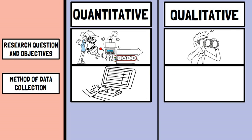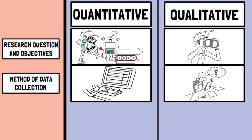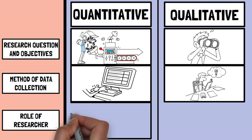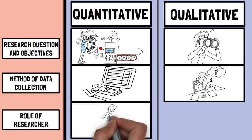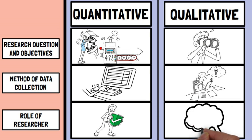Qualitative research, on the other hand, collects non-numerical data using flexible methods and analyzes it using interpretation and coding. Thirdly, the role of researcher differs. Quantitative research assumes that the researcher is objective and unbiased and the data is valid and reliable. Qualitative research acknowledges that the researcher's perspective shapes the research and the data is subjective and contextual.